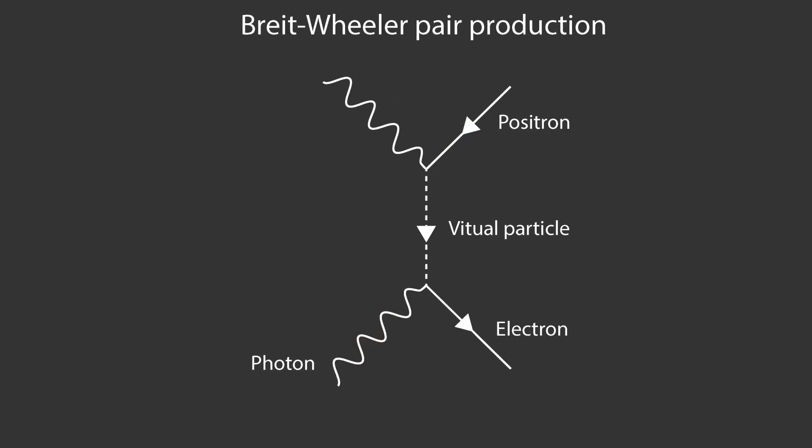To generate matter from light, we need to have two photons interact to produce a matter-antimatter pair, which is called the Breit-Wheeler process and is what was achieved in this latest work.